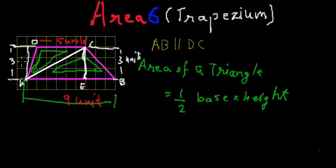So in the case of a trapezium, when we draw a diagonal, the diagonal divides the trapezium into two triangles in such a way that both triangles have exactly the same height. The height of both triangles is equal to the gap between the two parallel lines of the trapezium.